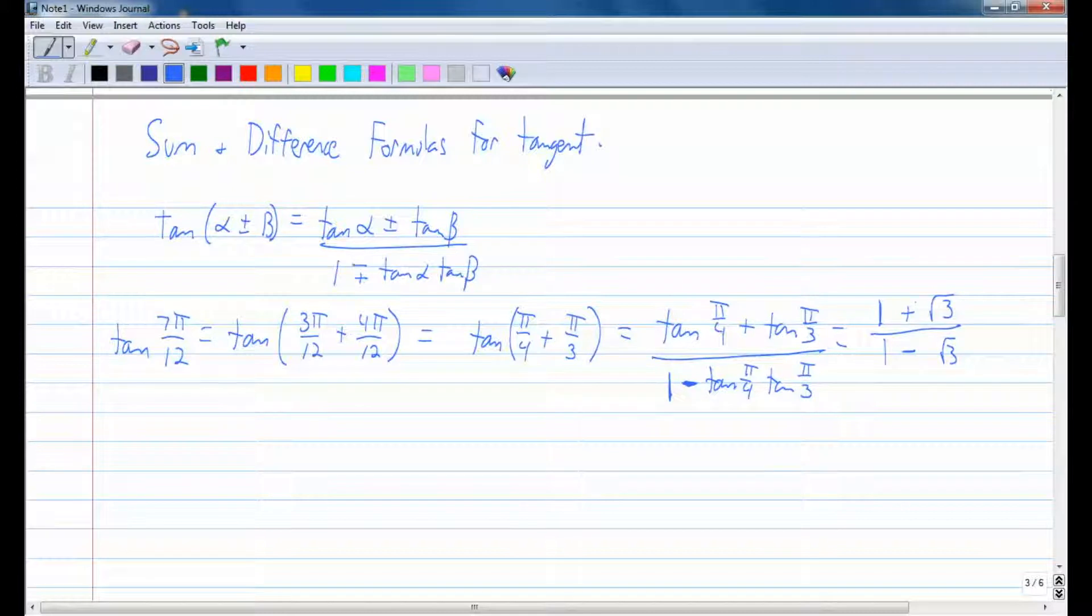I don't want to leave my answer like that because we don't like leaving radicals in denominators. So you need to rationalize by multiplying by the conjugate. The conjugate of the denominator is 1 plus the square root of 3.